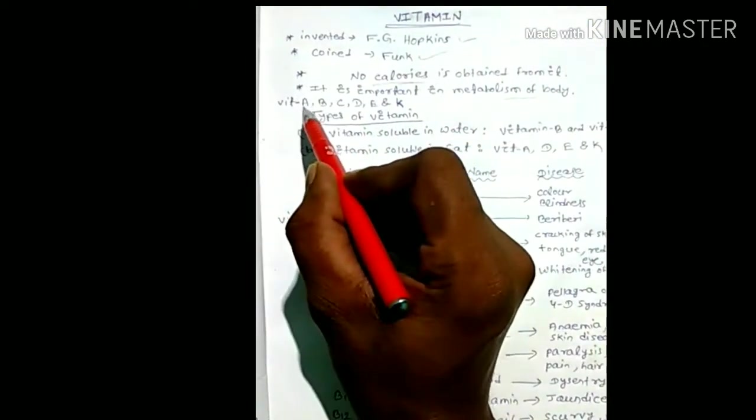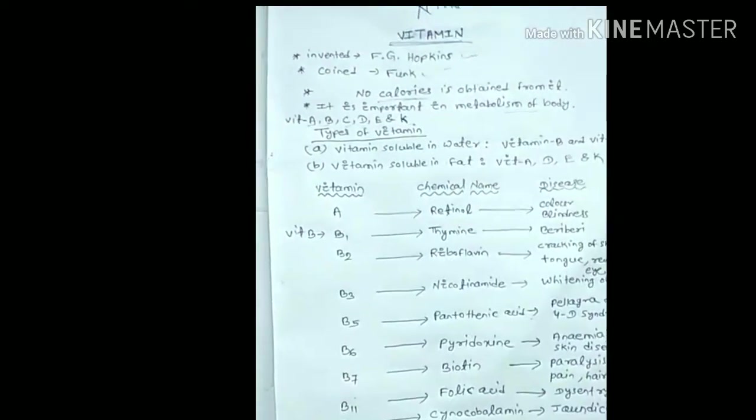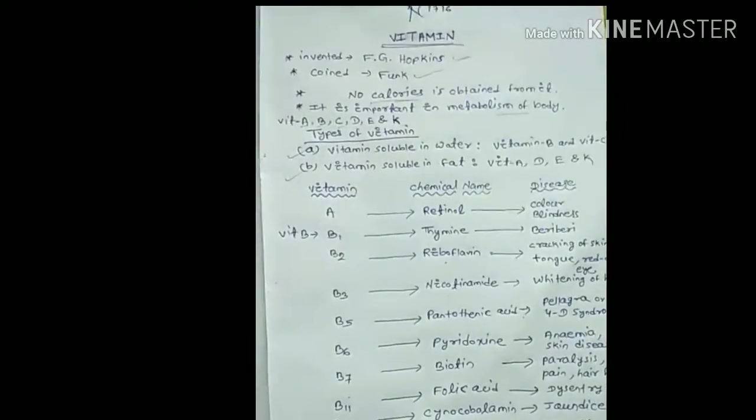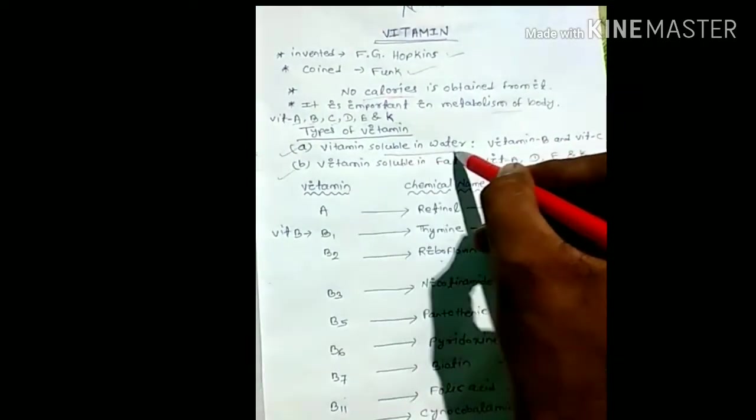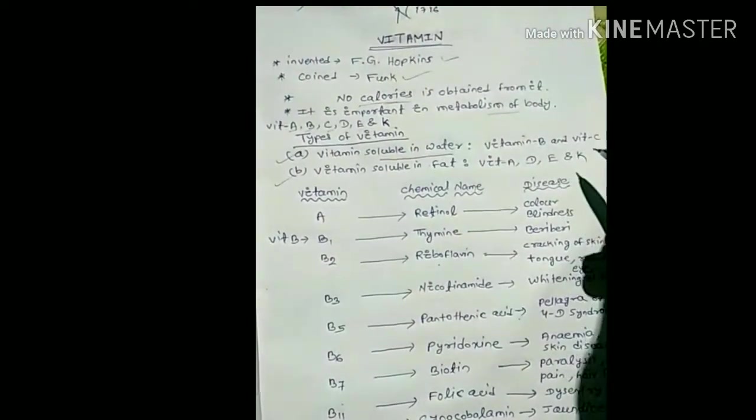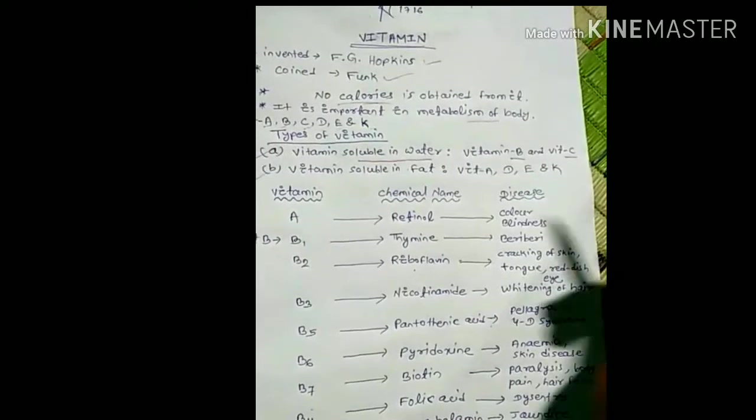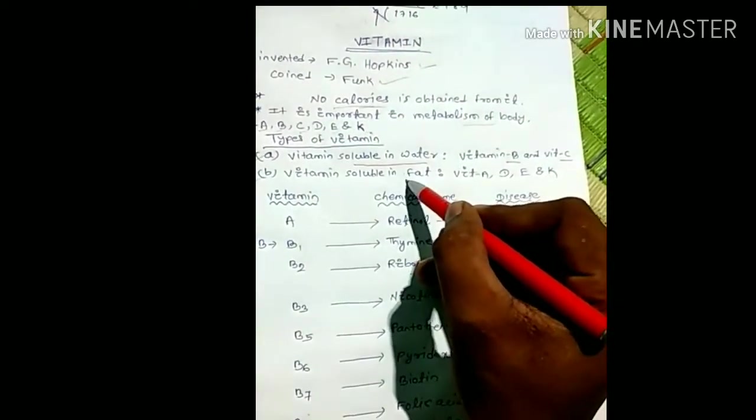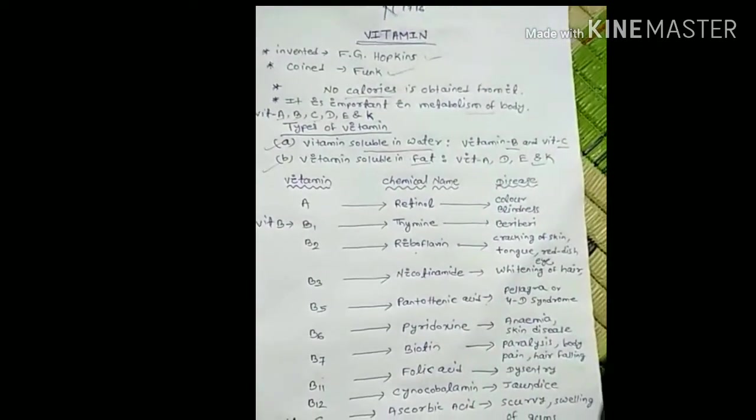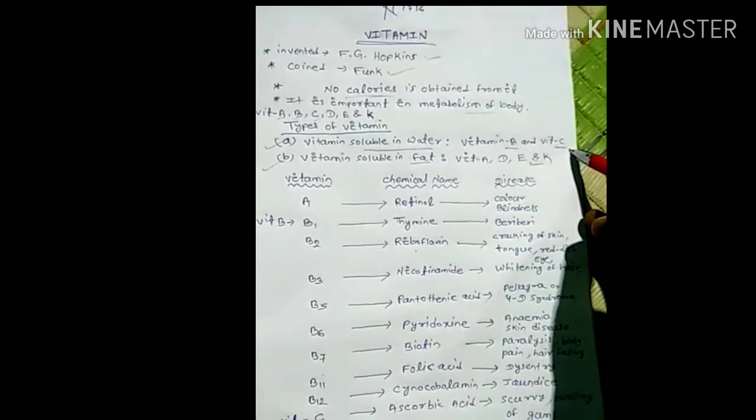The types of vitamins are A, B, C, D, E, and K. Vitamins are divided into two types: water-soluble vitamins, which are vitamin B and vitamin C, and fat-soluble vitamins, which are vitamin A, D, E, and K.